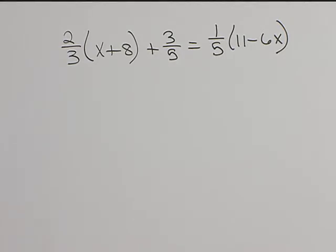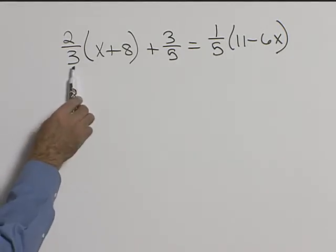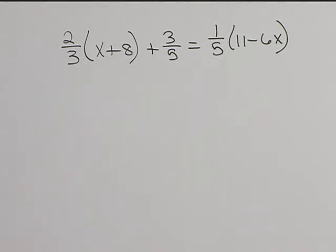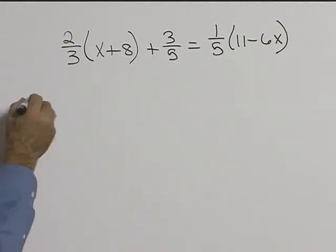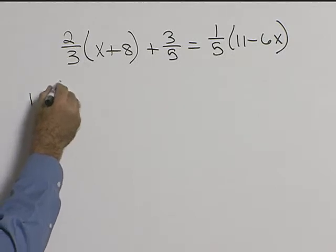First thing, let's notice we have fractions in this problem. So what's the number that 3, 5, and 5 will all go into? Well that would be 15. So let's multiply the whole thing through by 15.